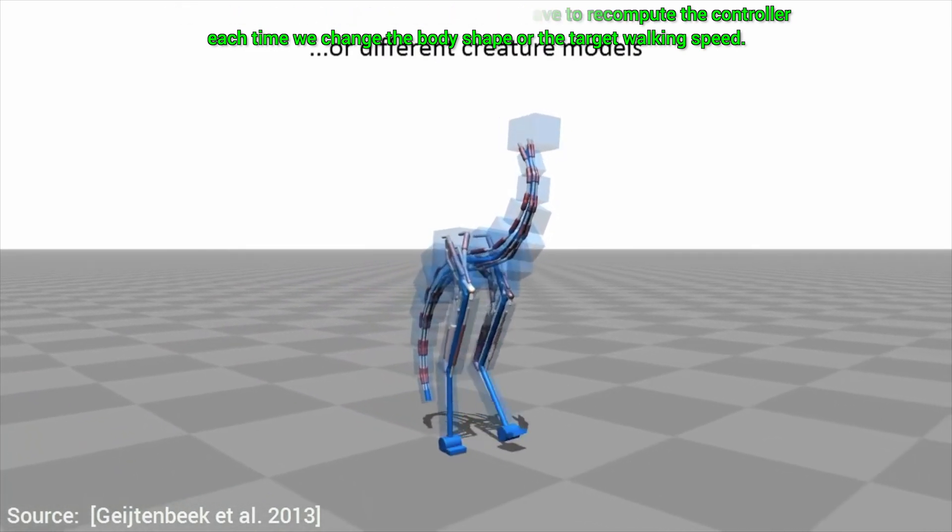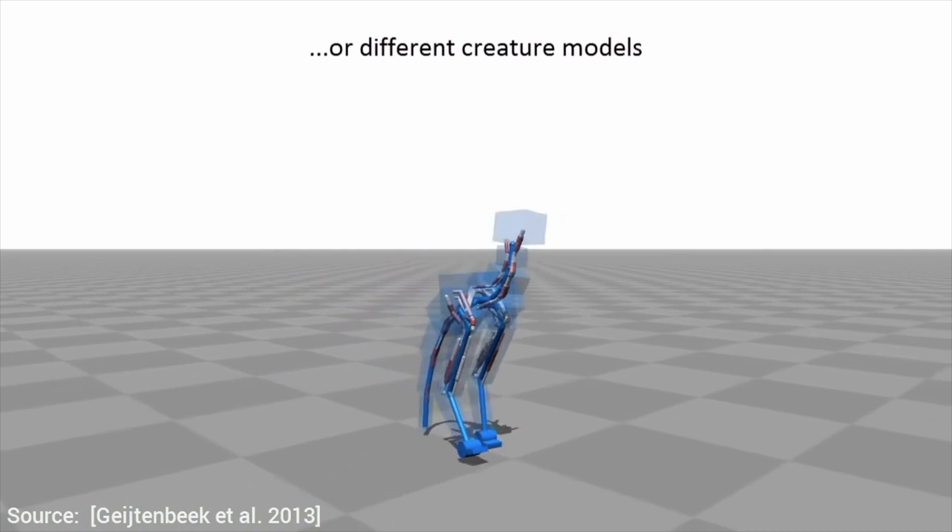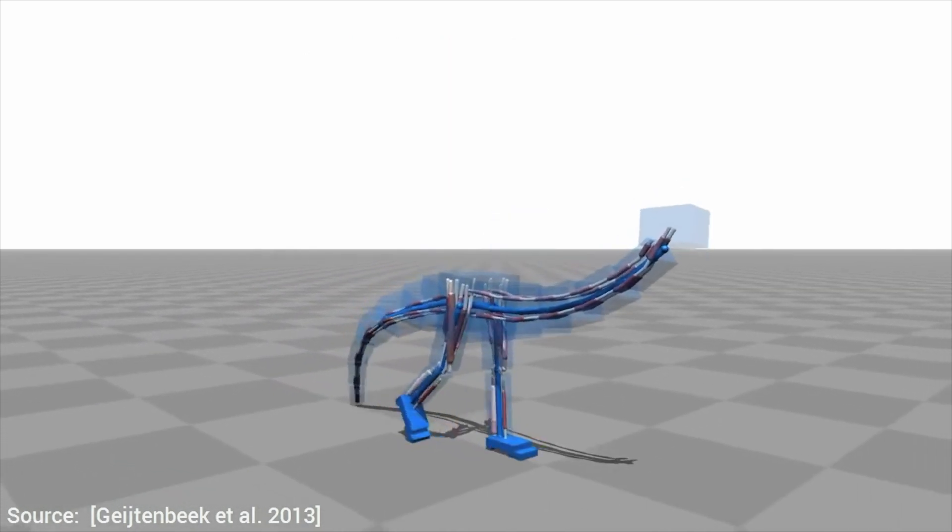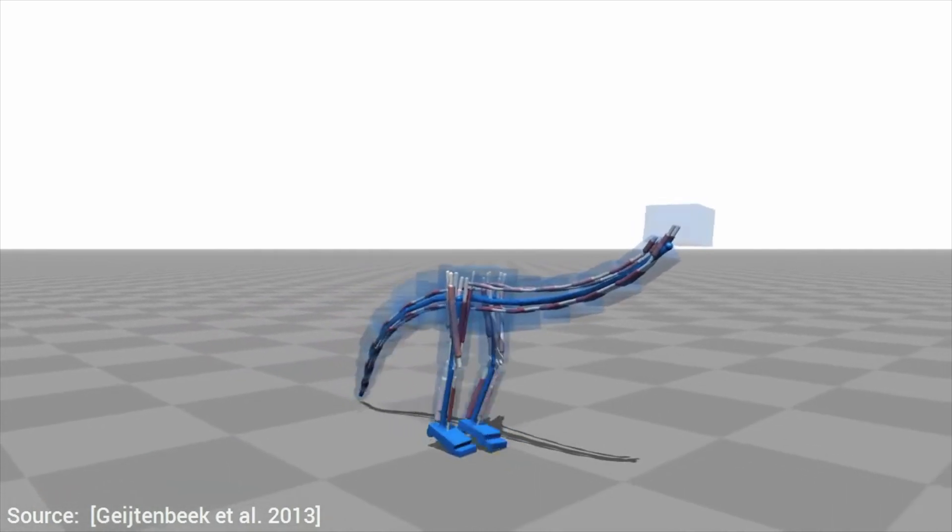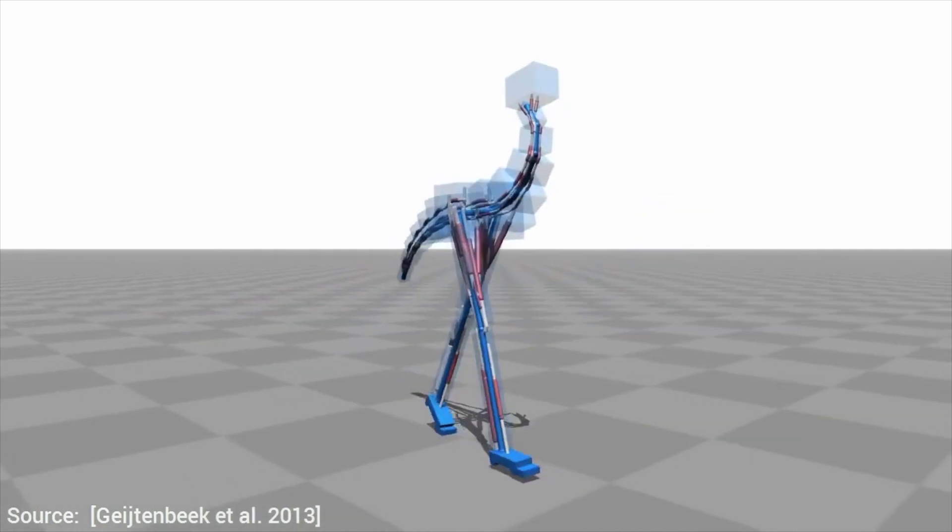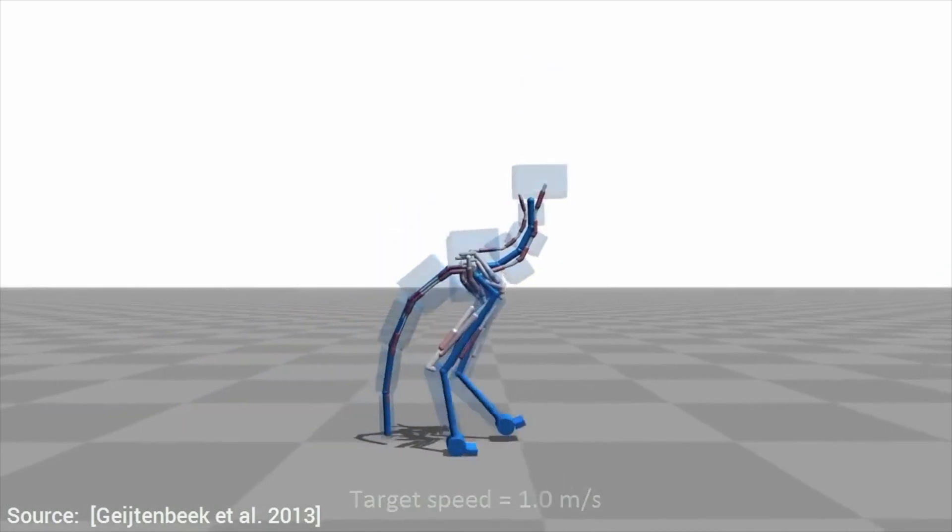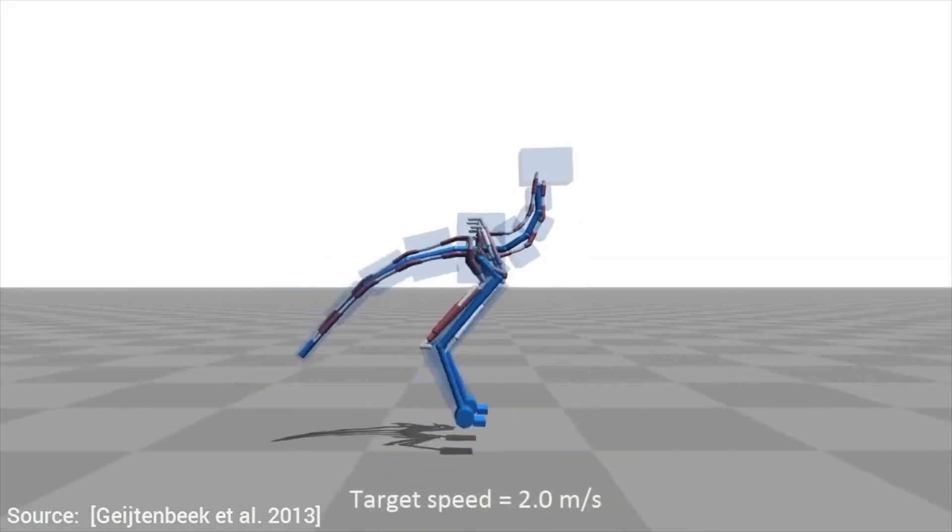Therefore, our next question is, how far have we come in these seven years? Can these new machine learning methods help us create a more general agent that could control not just one body, but a variety of different bodies? Let's have a look at today's paper, and with that, let the fun begin!